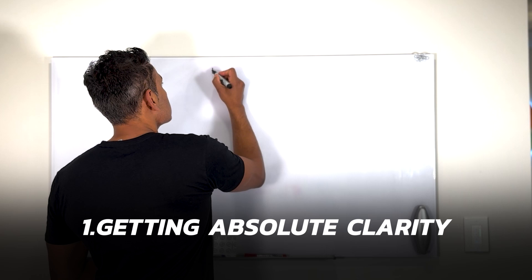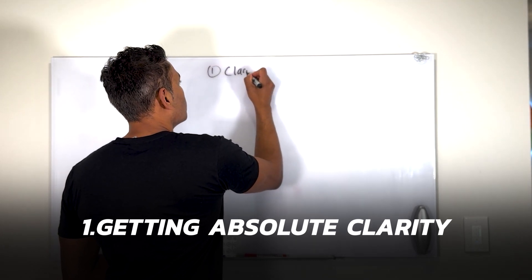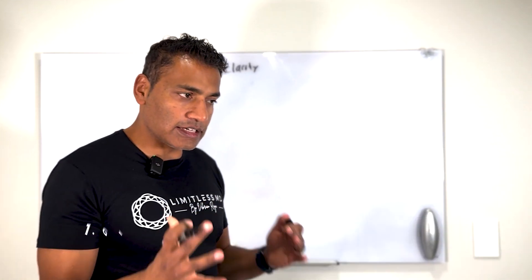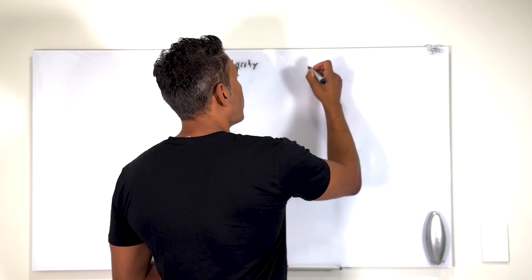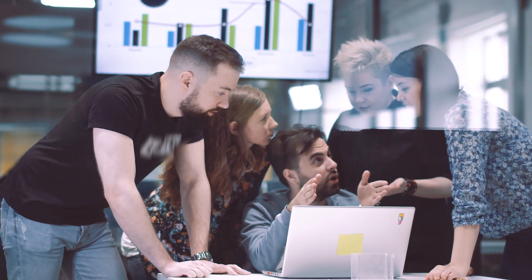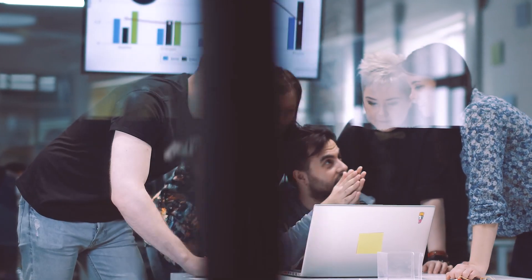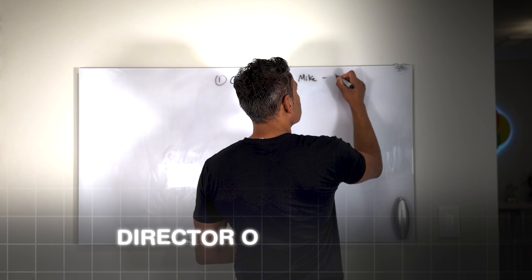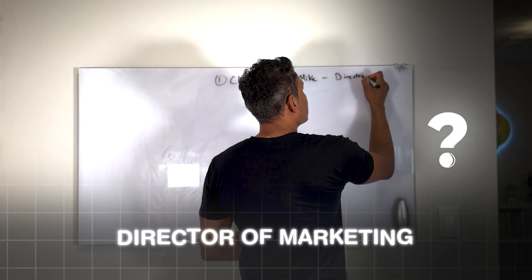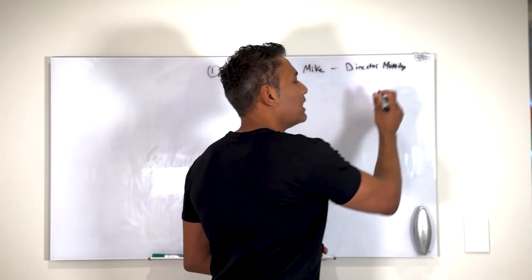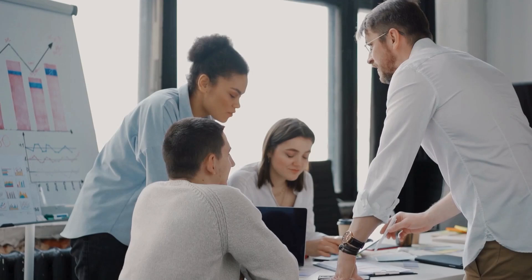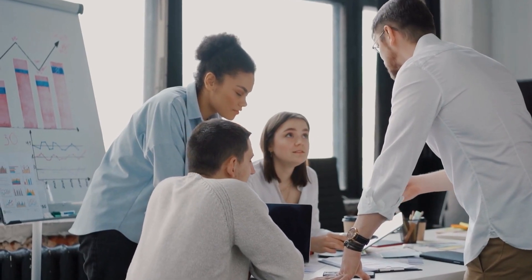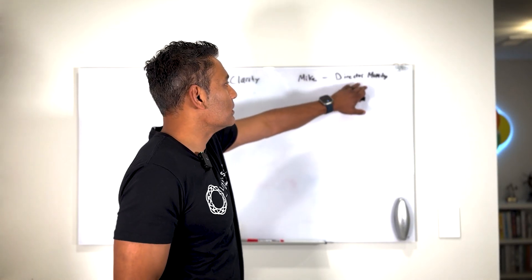Number one is getting absolute clarity on what you want this person to do. Let's give an example. Let's say I'm hiring Mike for one of my companies. I need a director of marketing. So now I'm very clear. He's a director of marketing. Why is that important? Because the caliber of the person I'm looking for is a little bit higher than just a marketing assistant or a marketing intern.